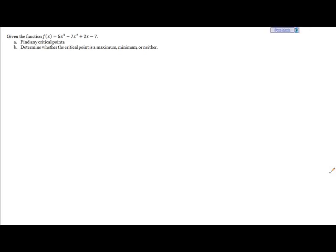We're given a function and we're first asked to find any critical points. So to do that we need to locate our derivative function, which will be f prime of x equals 15x squared minus 14x plus 2.